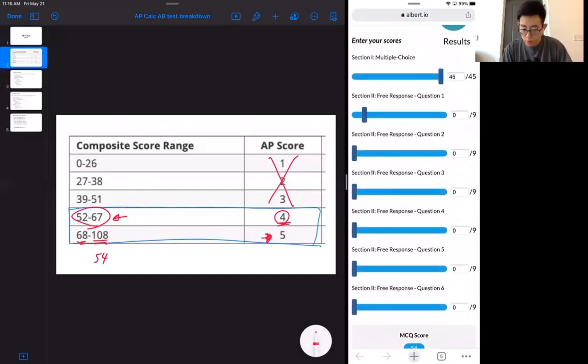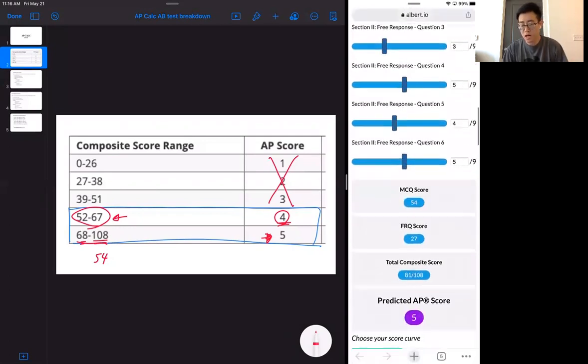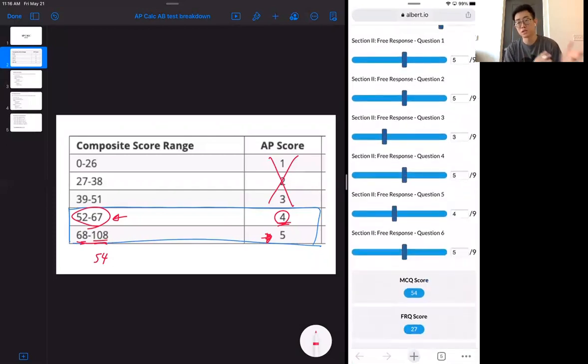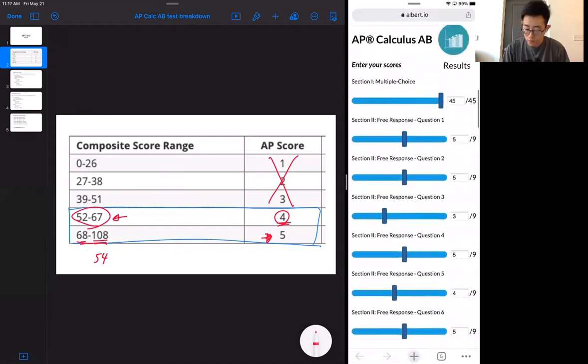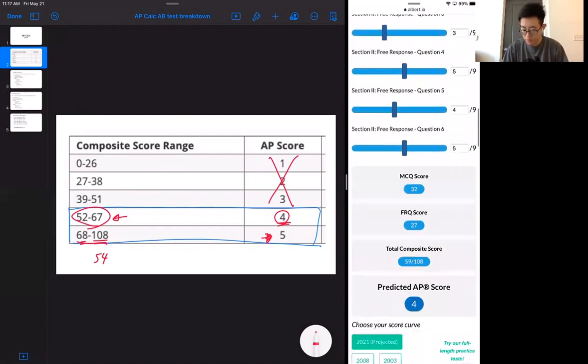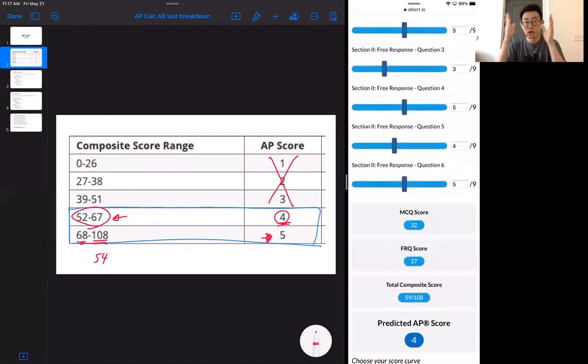Most of your points will come from the free response questions. Even if you just get half of this right, you still end up with a 5 if you get a perfect score on multiple choice and half of the open-ended questions right. Even if I drag down the multiple choice question to maybe 27, you still get a 4. So half of the free response, half of the multiple choice right, you get a predicted score of 4.